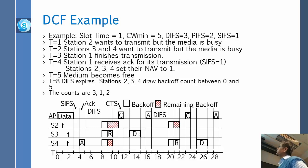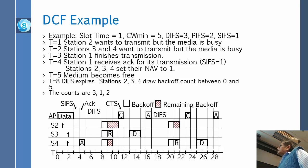Station 1 receives the ACK for its transmission. It waits one unit of time and then receives the acknowledgement. At T=5, the ACK is over and the NAV expires for most of these stations. Now they have to wait for DIFS, which is 3 units. At T=8, they all sense the medium.